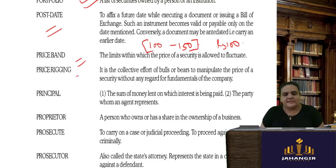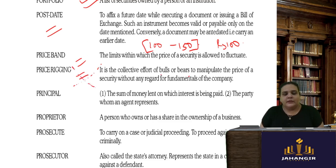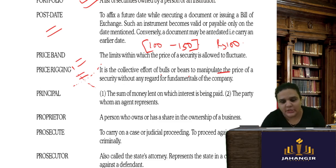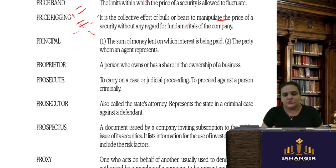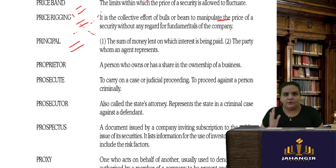Price rigging is the collective effort of bulls or bears to manipulate the price of securities beyond what the company's fundamentals justify. Bulls push the market up, bears push it down. A notable example is the Harshad Mehta case — the web series based on it shows how he turned the market and changed fundamentals just to make money. Principle refers to the actual sum of money that was originally lent.